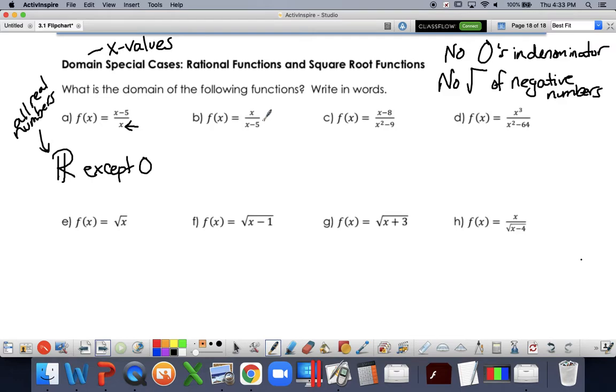Over here, I want to make sure x minus 5 does not equal 0. Well, that happens when x is equal to 5. So in this case, I would say all real numbers except 5.